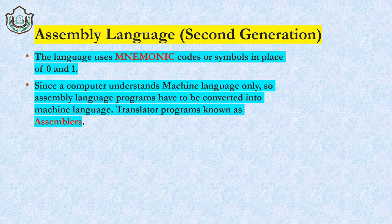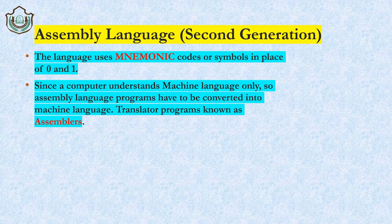Examples of mnemonic codes are: ADD for addition, SUB for subtraction, MUL for multiplication. Symbols like @, ?, and ! can also be used. So in assembly language we are not using 0 and 1 — we are using mnemonic codes and symbols. But there is a problem: if we write ADD or SUB directly, the computer will not understand, so we need a solution. The computer has a translator called an assembler.